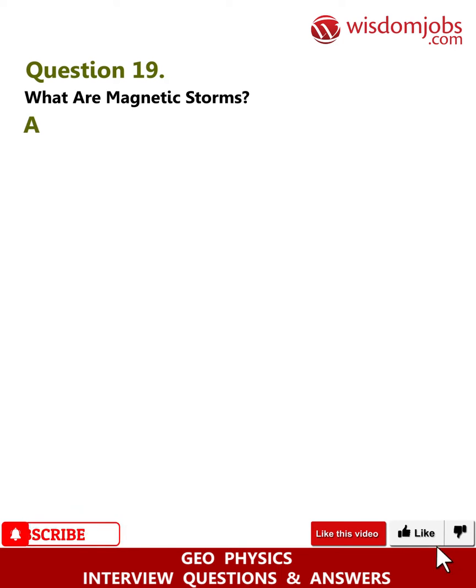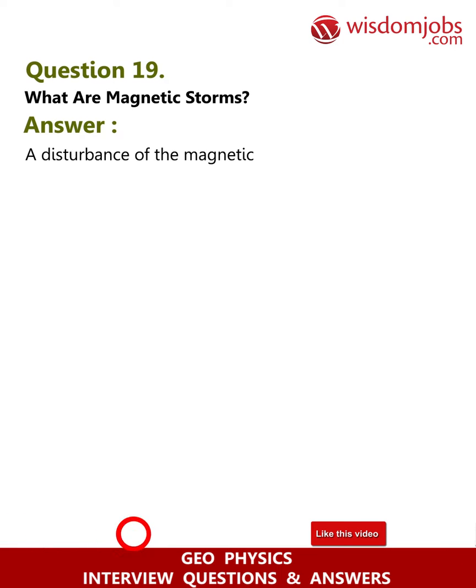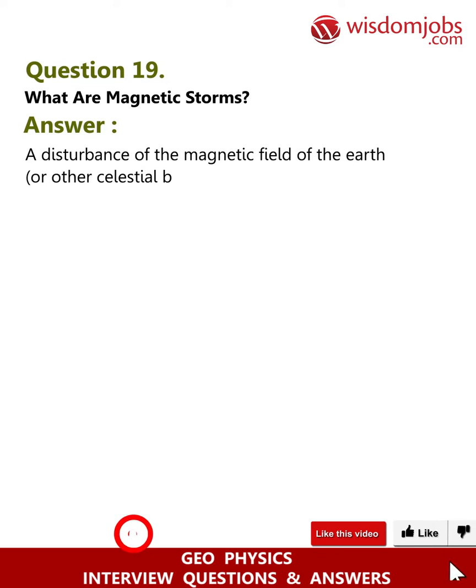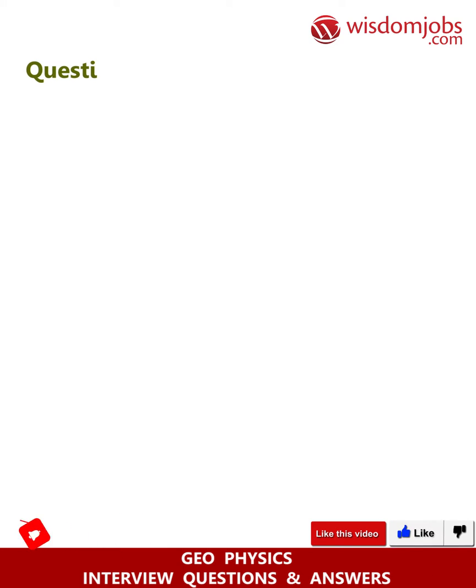Question 19: What are magnetic storms? Answer: A disturbance of the magnetic field of the earth or other celestial body.